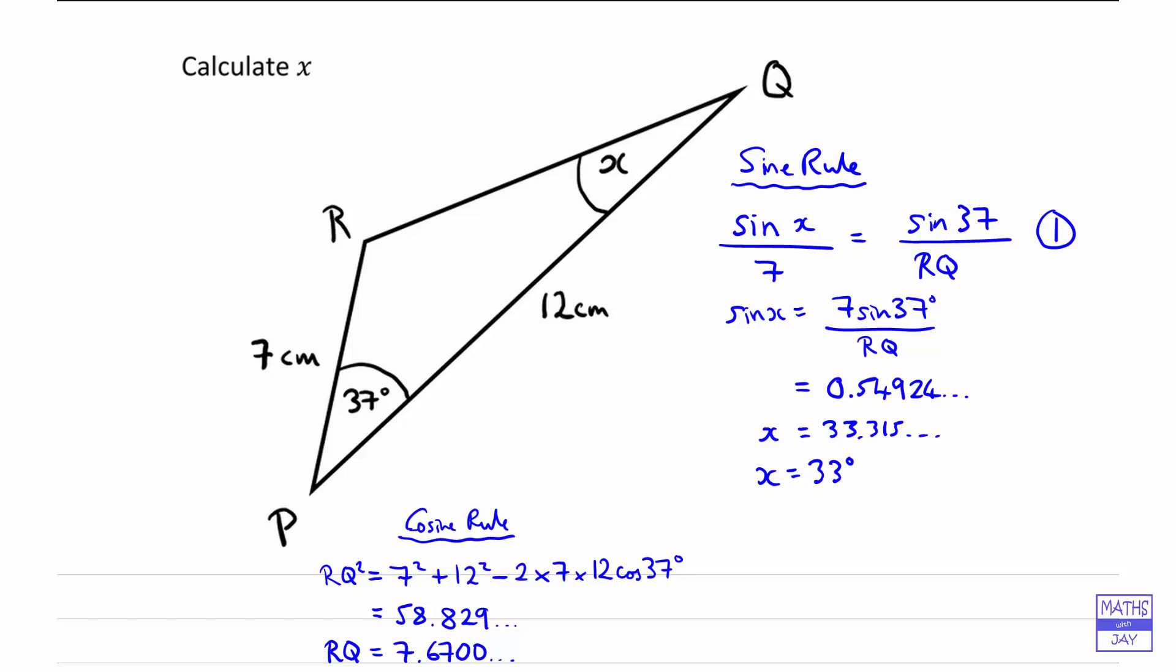Now remember, you need to also consider when you're using the sine rule like this, if there's another possible angle, but if you look at the sides that we've got here, the side opposite angle x is 7, and there's another side in the triangle that's 12, so that's a bigger side,